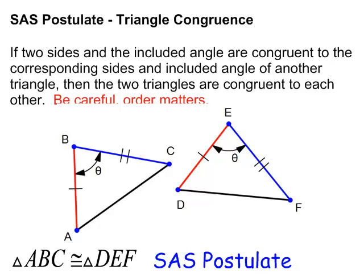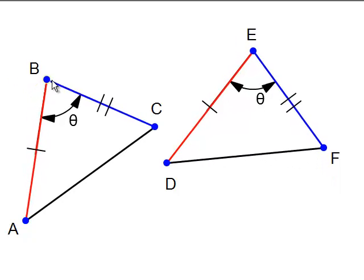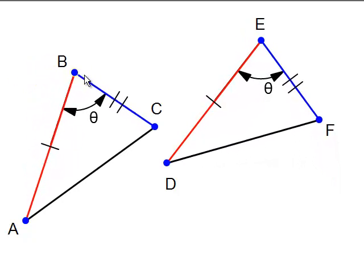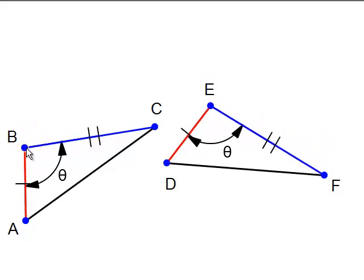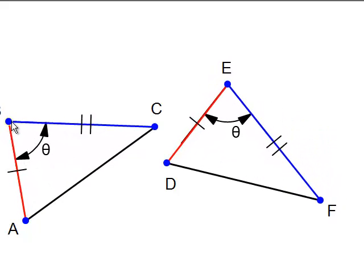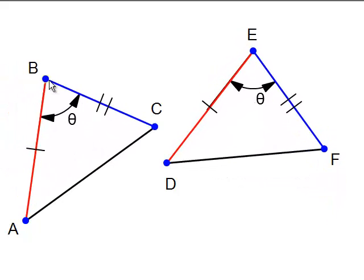Now let's demo this. ABC is congruent to TEF by side-angle-side. Notice that I can drag point B, and no matter what I do, those two triangles are congruent by side-angle-side.